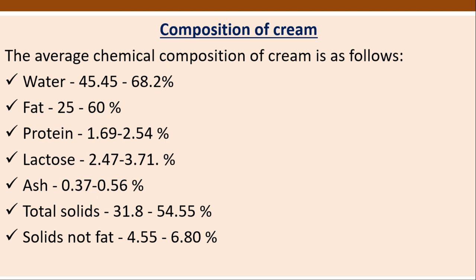The average chemical composition of cream is: water 45.45% to 68.2%, fat 25% to 60%, protein 1.69% to 2.54%, lactose 2.47% to 3.71%, ash 0.37% to 0.56%, total solids 31.8% to 54.55%, and solids-not-fat (SNF) 4.55% to 6.80%.